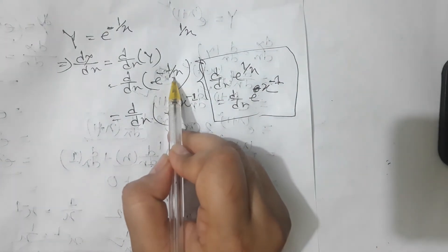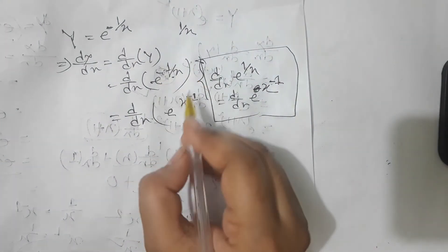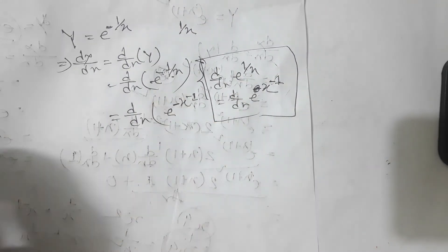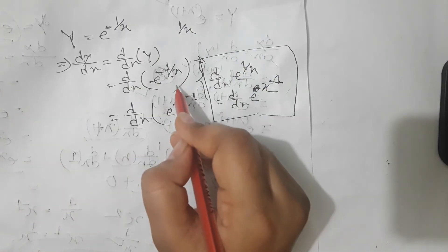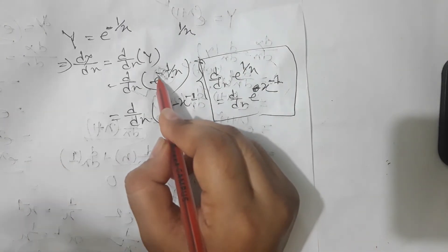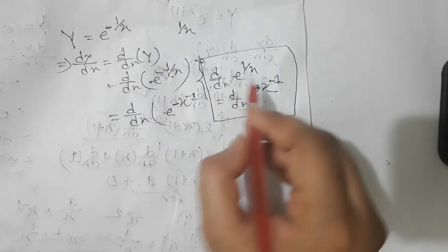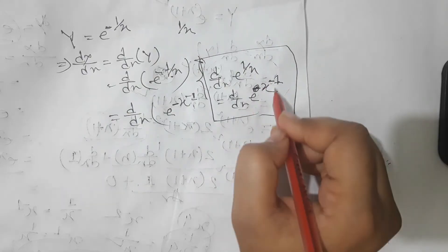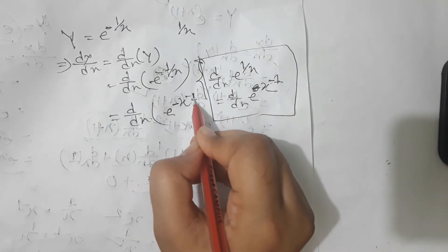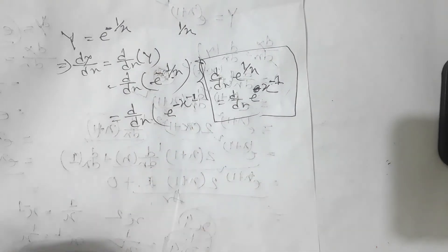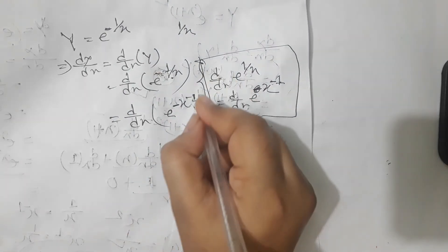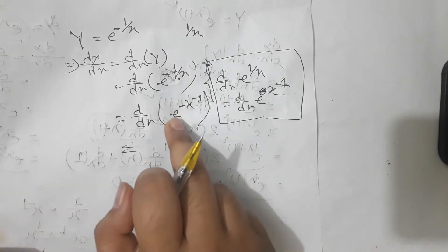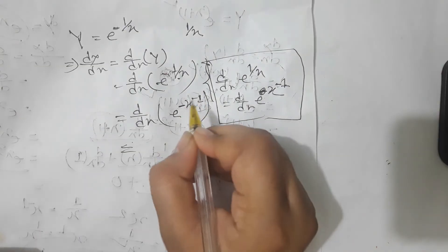I'll write 1 by x to the power minus 1 by x to the end. So what is the other way? If I write 1 by x to the end then we solve x. The x is less than y. Then we will solve x. So the x is less than x. I would like to show 1 by x.